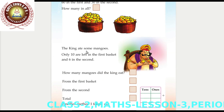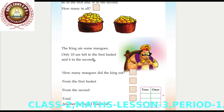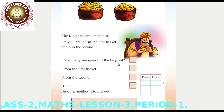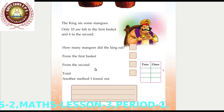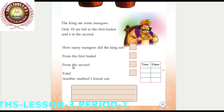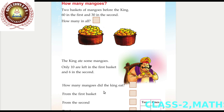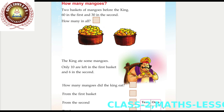The king ate some mangoes. Only ten are left in the first basket and six in the second. We find how many mangoes did the king eat? From the first basket, how many mangoes were eaten by the king. From the second basket, how many mangoes were eaten by the king. And find the total mangoes he ate.